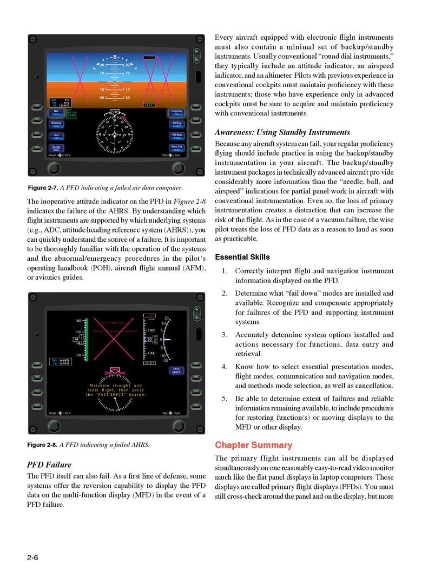Chapter Summary. The primary flight instruments can all be displayed simultaneously on one reasonably easy-to-read video monitor, much like the flat panel displays in laptop computers. These displays are called primary flight displays, PFDs. You must still cross-check around the panel and on the display. Information is available in a smaller space and in easier-to-read colors. These convenient displays receive data from sensors such as magnetometers or magnetic flux valves to determine heading reference to magnetic north. The attitude, pitch and roll of the aircraft, is sensed by the attitude heading reference system, AHRS, and displayed as the attitude gyro would be in conventional instrumentation. The altitude, airspeed, and outside temperature values are sensed in the air data computer, ADC, and presented in the PFD on vertical scales or portions of circles.